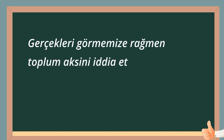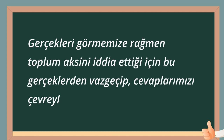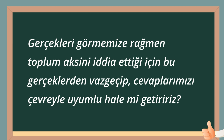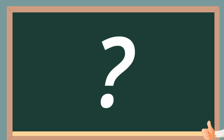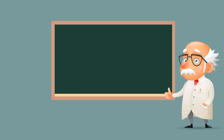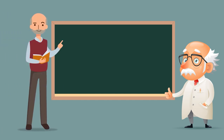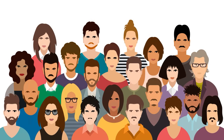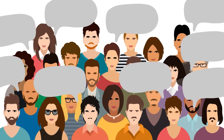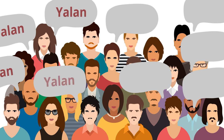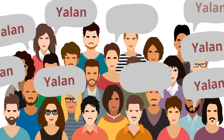Gerçekleri görmemize rağmen toplum aksini iddia ettiği için bu gerçeklerden vazgeçip cevaplarımızı çevreyle uyumlu hale mi getiririz? Bu soruları bizim gibi sosyal psikolog Salomon Asch de merak etmiş ve 1951 yılında bir dizi deney gerçekleştirmiştir. Bu deneylerin amacı yöneltilen sorulara karşı grubun geri kalanı farklı bir cevap verdiğinde katılımcıların cevaplarının, doğru olduğunu bilmelerine rağmen grup baskısı ve onaylanma-uyum isteğiyle değişip değişmeyeceğini gözlemlemektir.